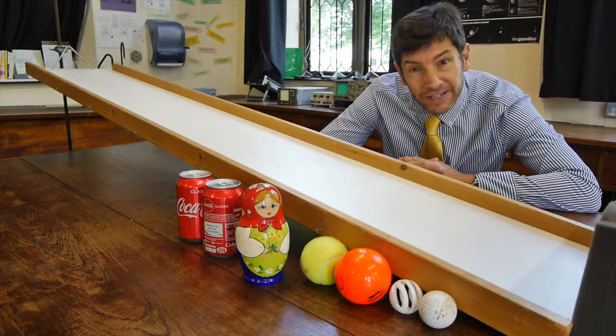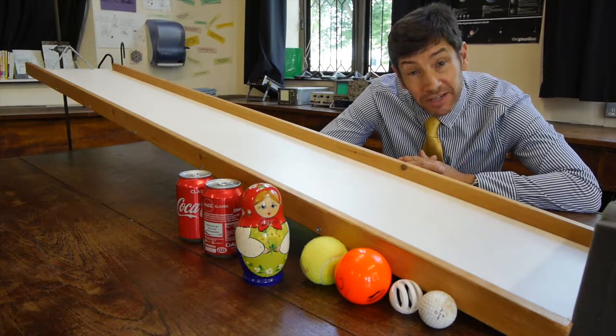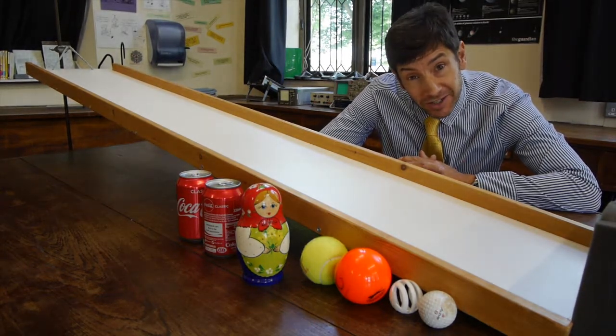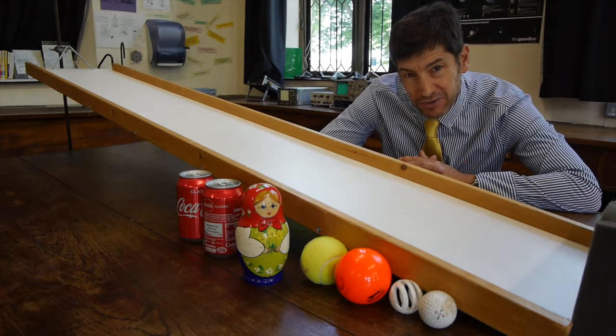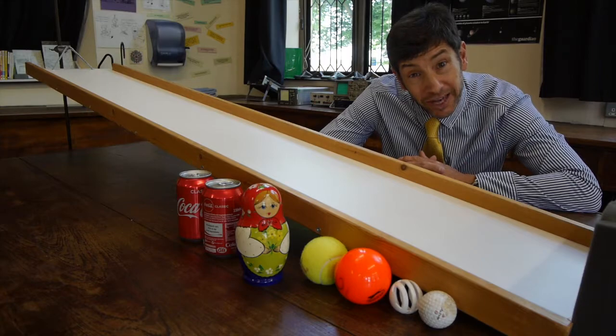Welcome back. I've got a really fun experiment for you today, one that looks at how similarly sized objects roll down slopes. The answer is very counterintuitive, and I'm going to show you how this can be explained by looking at a Russian doll.